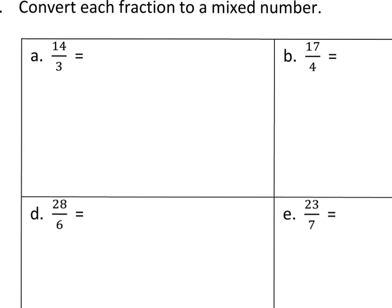Along the bottom, solve without a number line — just straight division. 14 divided by 3: how many 3's go into 14? 3, 6, 9, 12, 15 — too much. So 4 threes make 12. Count up to 14: that's 2 more out of the thirds. Answer: 4 and 2 thirds. How about 17 divided by 4? 4 goes into 17 four times with 1 left over, and the denominator stays the same.